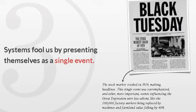Systems fools us by presenting themselves as a single event. Well known the stock market crash in 1929. They said Black Tuesday, I thought it was a Friday. This single event was overemphasized, and other more important events influencing the Great Depression were less salient. For instance, the 200,000 factory workers being replaced by machines, and the farmland value falling by 40%. But don't we have the same situation in the modern world now? Who's replacing workers?